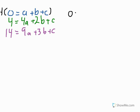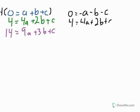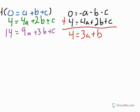Negative 1 times 0 is 0, negative 1 times a is negative a, negative 1 times b is negative b, and negative 1 times c is negative c. I then take the second equation — 4 equals 4a plus 2b plus c — unchanged and add these two together. 0 plus 4 gives me 4, negative a plus 4a gives me 3a, negative b plus 2b gives me b, and the negative c plus c cancels to 0. So now I have 4 equals 3a plus b.